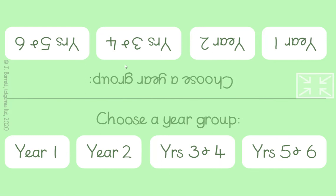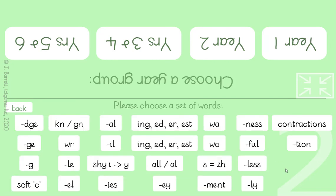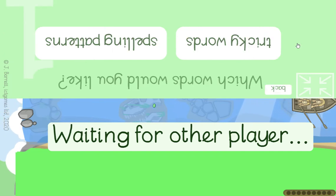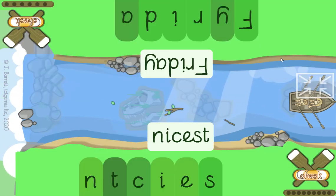I'm on this side, my friend's on the other side. I'm going to choose Year Two and then I can either do tricky words - which means the common exception words, the words you just can't sound out - or I can do spelling patterns. I'm going to do spelling patterns: words ending in ed, er, and ness. Then it's waiting for the other player, who is sat opposite you. They're going to be a Year One child working on their tricky words, and they're going to go for days of the week.